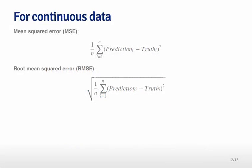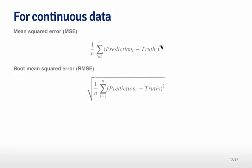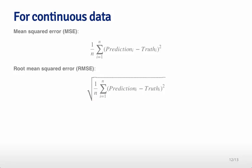For continuous data, you don't have a simple two-class scenario — the goal is to see how close you are to the truth. One common way is mean squared error: you calculate the difference between the prediction and the truth for every sample, square it so numbers are all positive, and average the total distance. The root mean squared error takes the square root of that quantity, putting it back on the same scale as the predictions. This is probably the most common error measure used for continuous data.